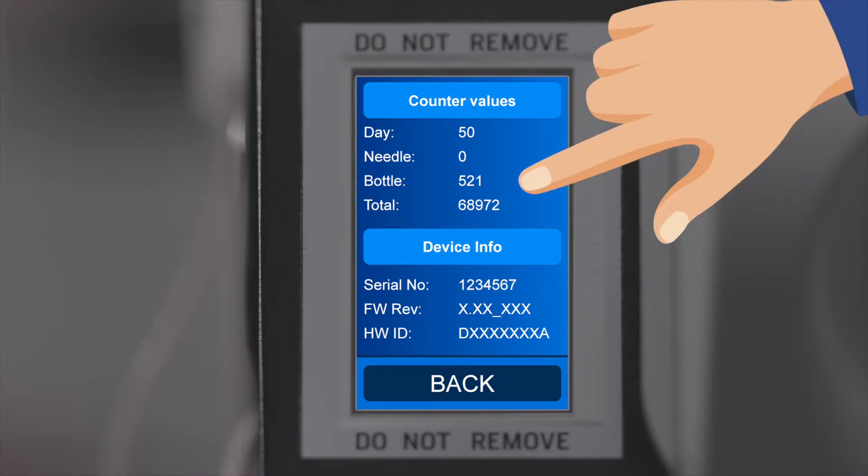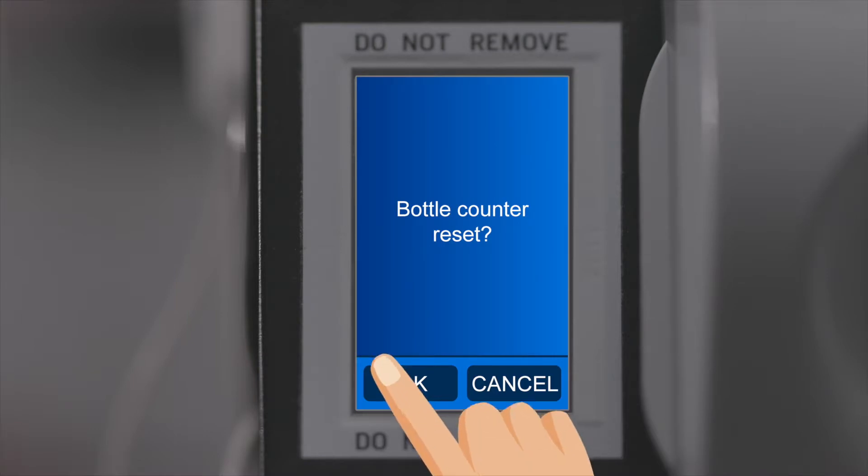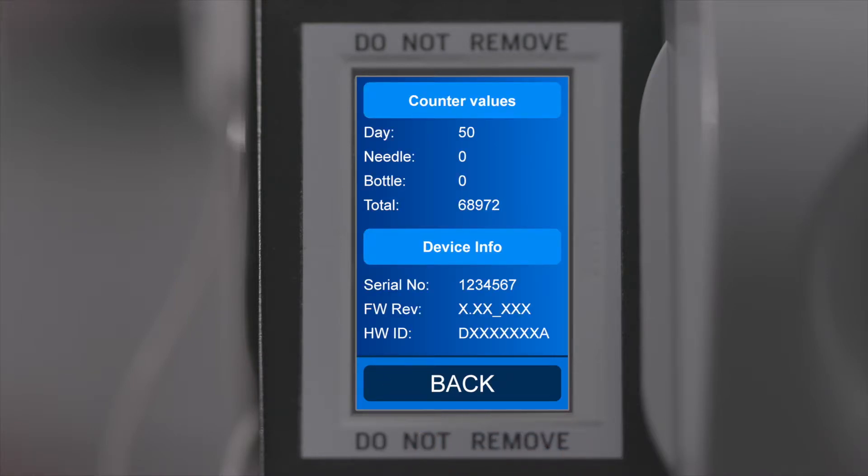The bottle counter indicates the shots per bottle used. By touching it you can reset the counter. Hit back to get to the main screen again.